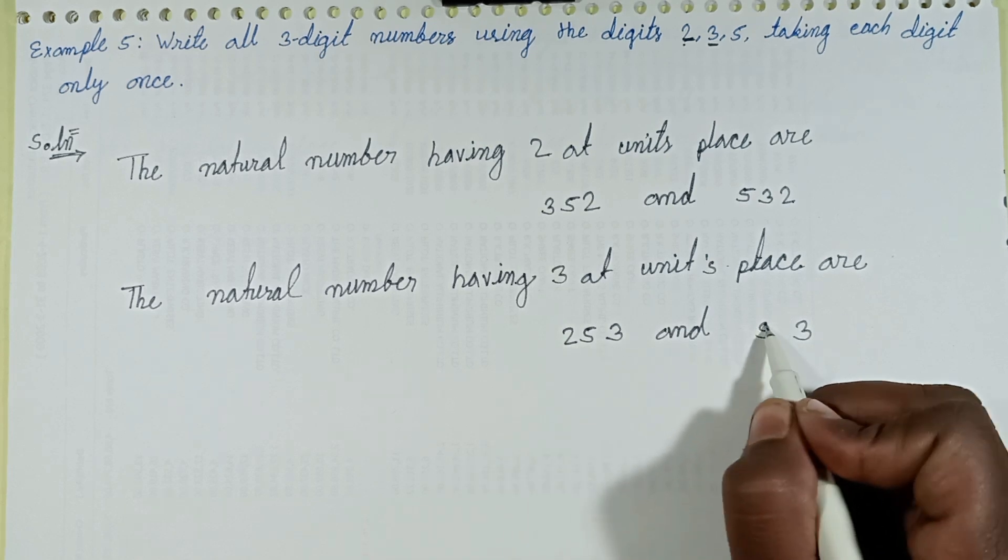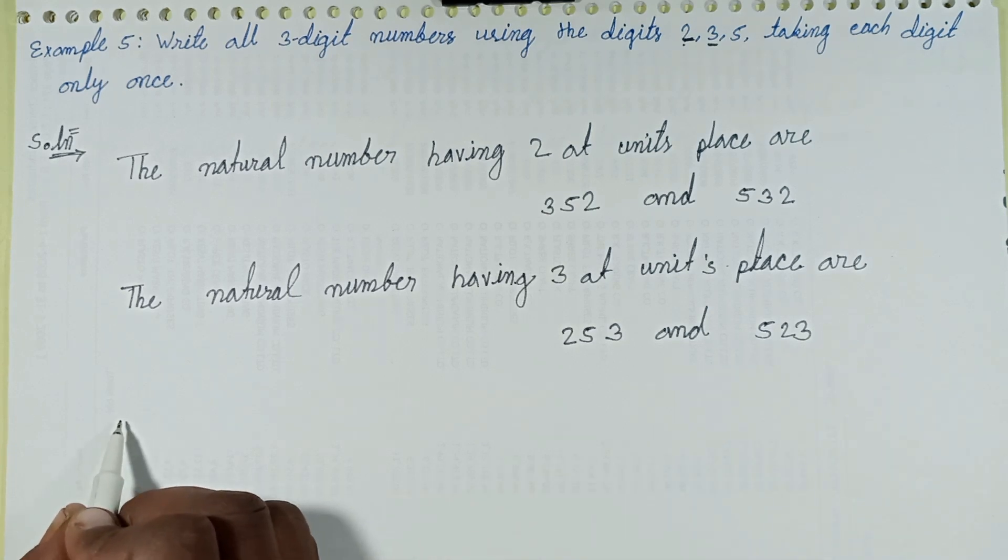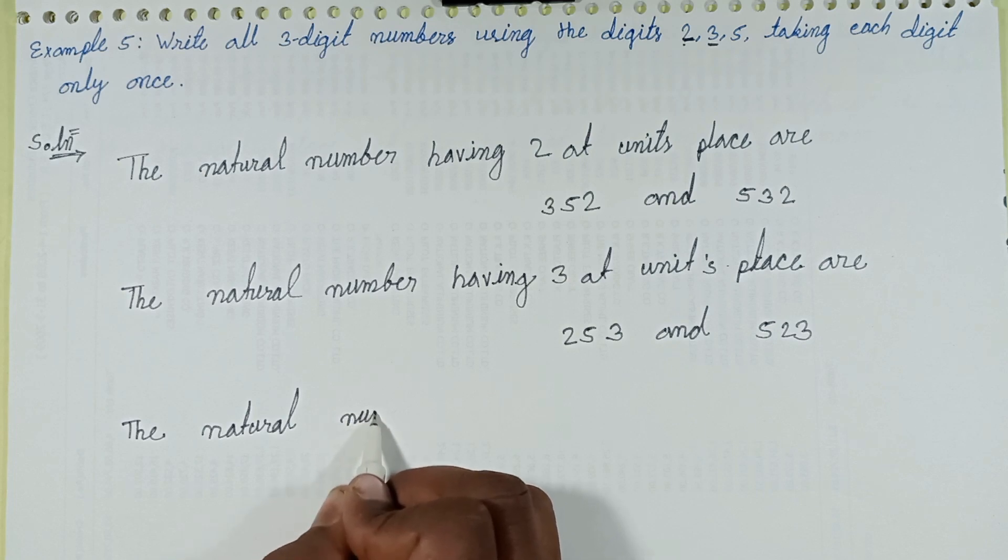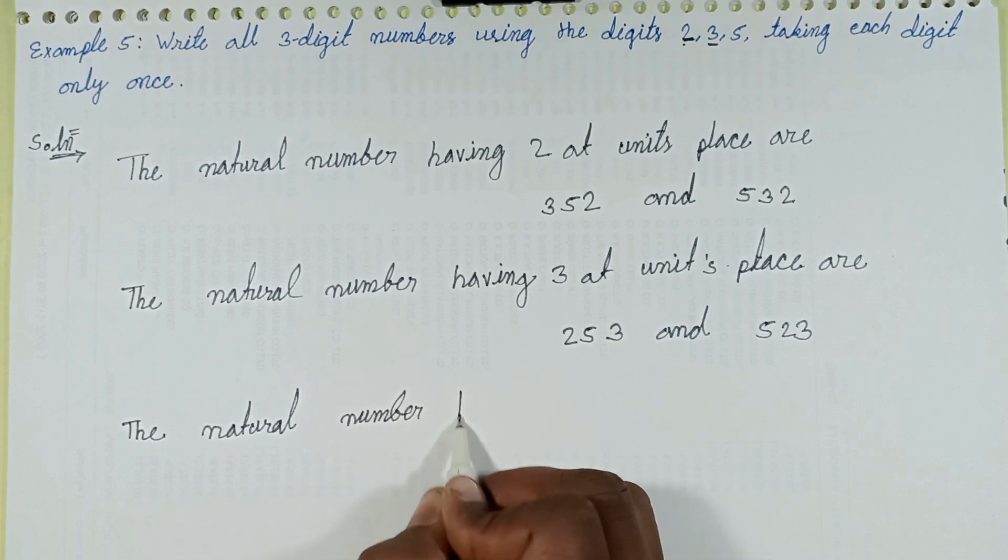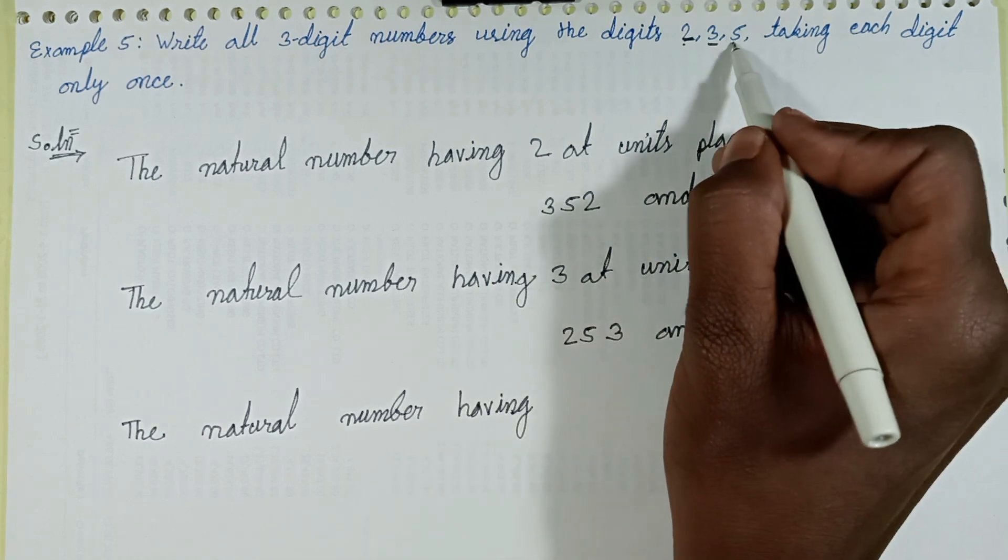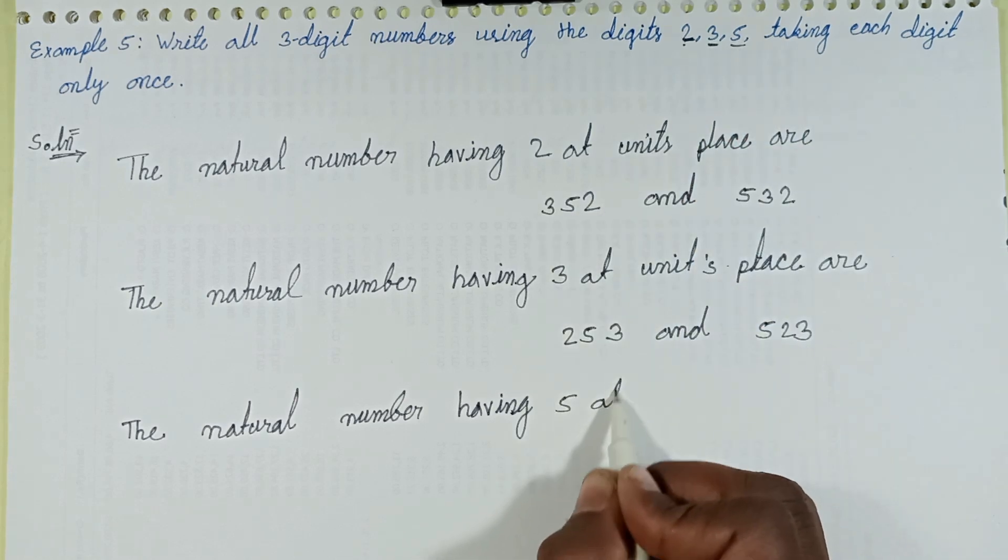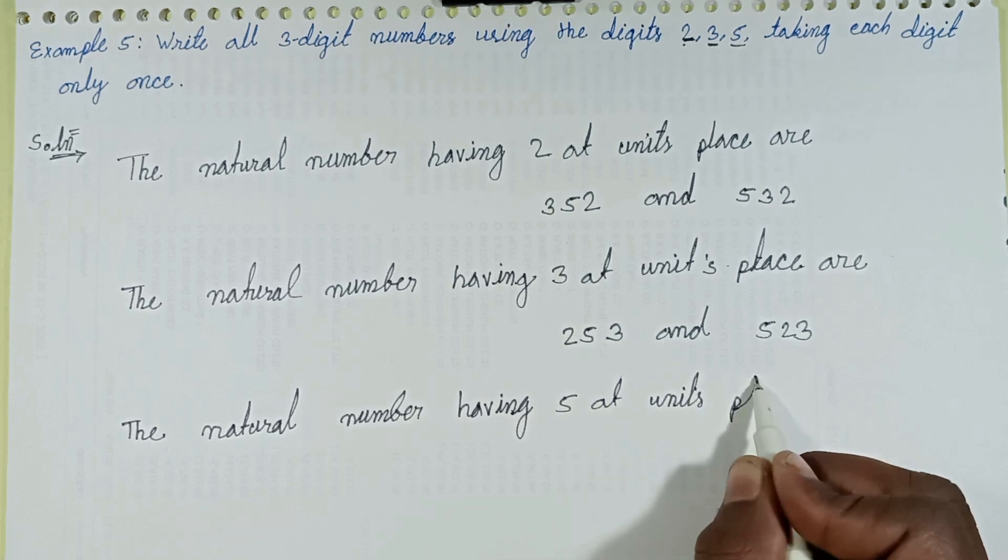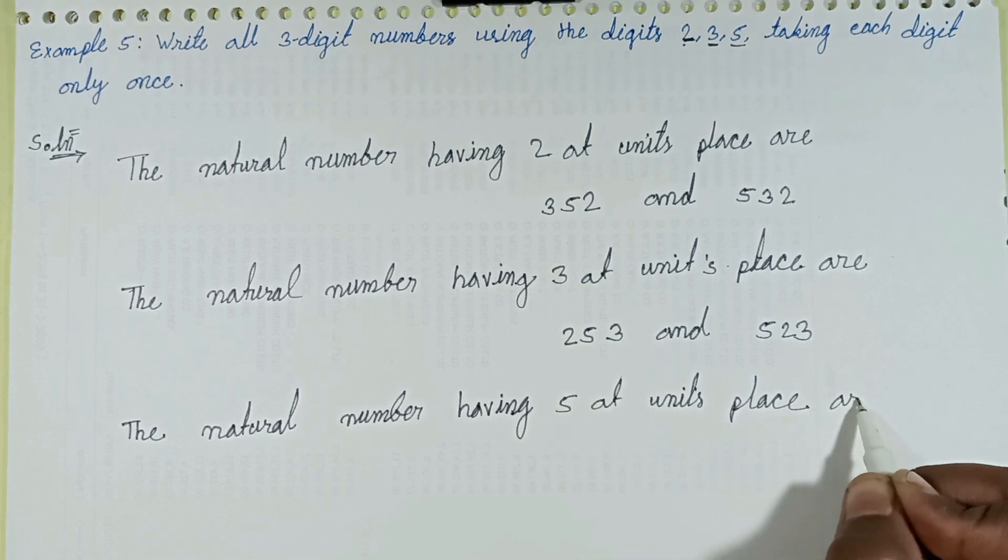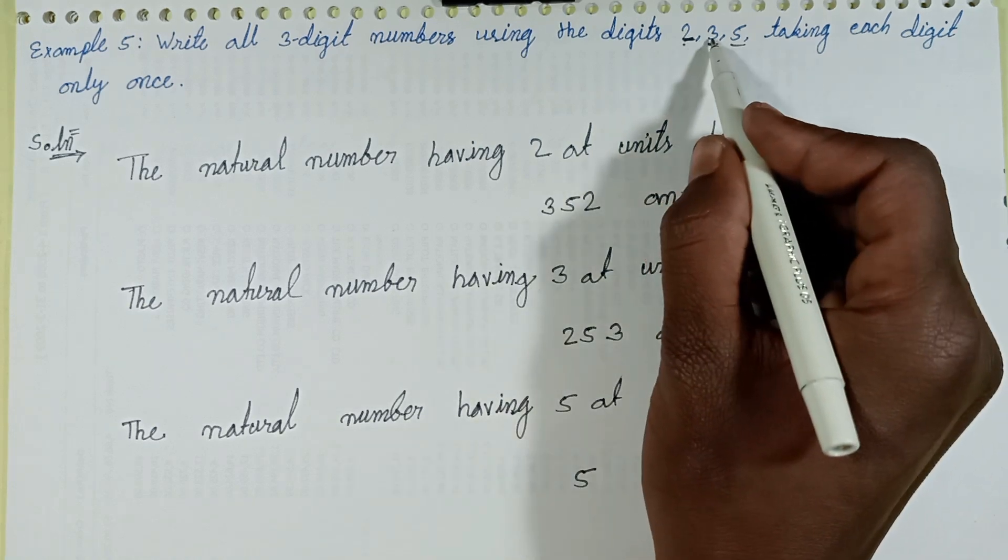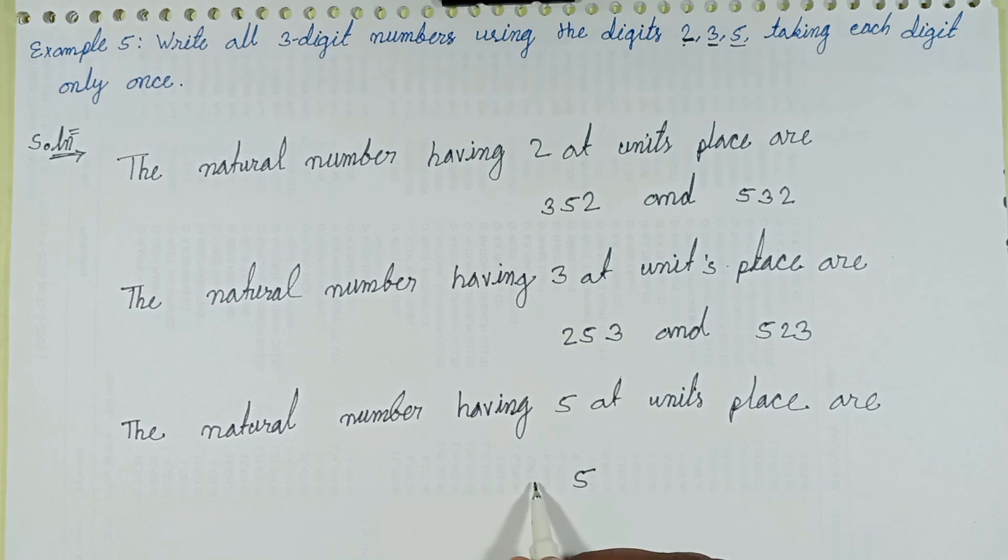Then next step, the natural numbers having 5 at units place: 2 and 3 at tens and hundreds place, giving 235 with 2 at hundreds place and 3 at tens place.